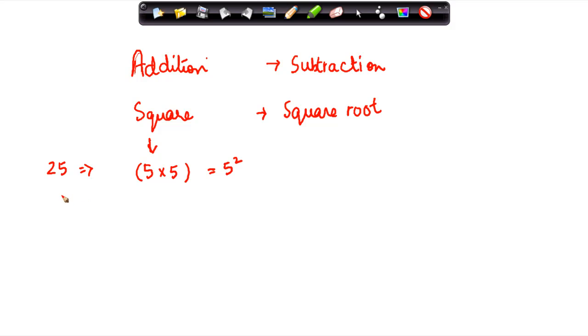So we say that square root of 25 is equal to 5, why? Because 5 when multiplied 2 times gives us 25.